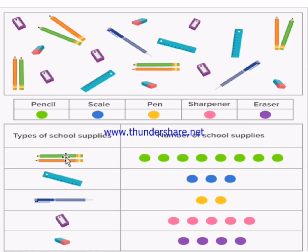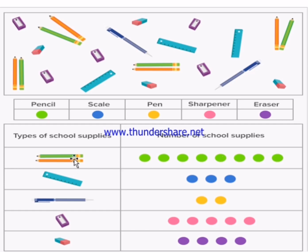The green color represents the number of pencils. Counting the colors, we can say that there are eight pencils here. In the same way, counting the blue color — because blue represents scale — we can say how many scales there are. Counting the blue color, we find three scales.